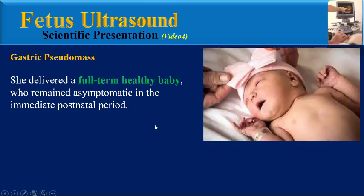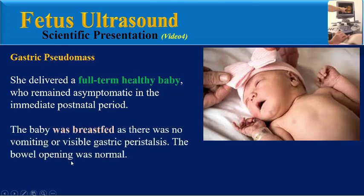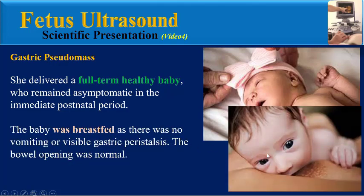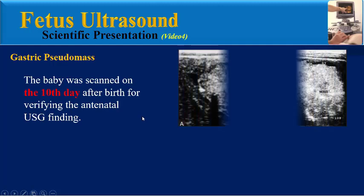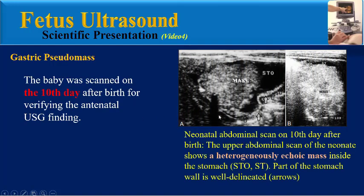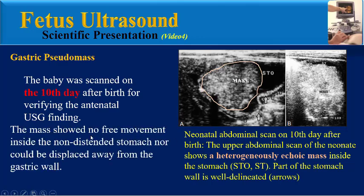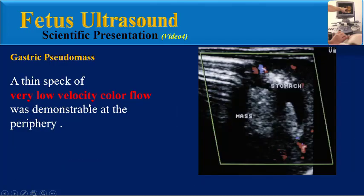She delivered a full-term healthy baby who remained asymptomatic in the immediate postnatal period. The baby was breast-fed as there was no vomiting or visible gastric peristalsis. The bowel opening was normal. The baby was scanned on the 10th day after birth for verifying the antenatal ultrasound finding. As we can see in this abdominal ultrasound scan on the 10th day after birth, a heterogeneously echoic mass inside the stomach. The mass showed no free movement inside the non-distended stomach, nor could it be displaced away from the gastric wall.